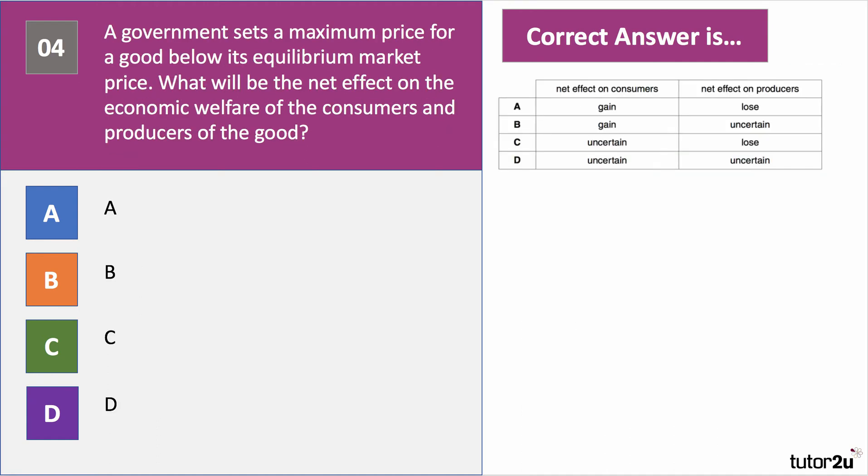Question number four. A government sets a maximum price for a good below the equilibrium price. What will be the net effect on the welfare of consumers and producers? Have a go at question number four.